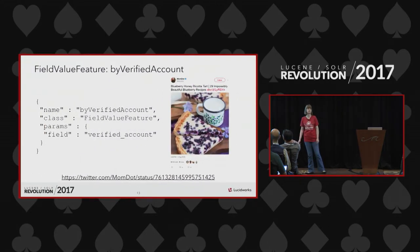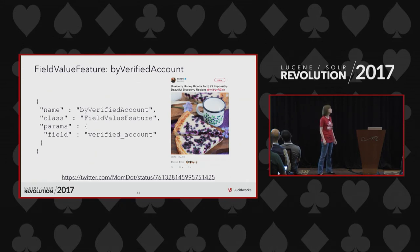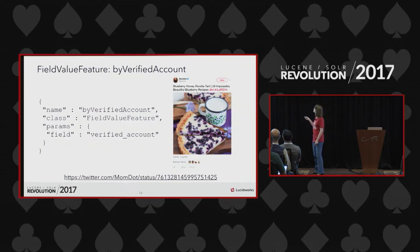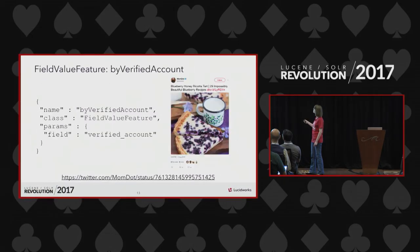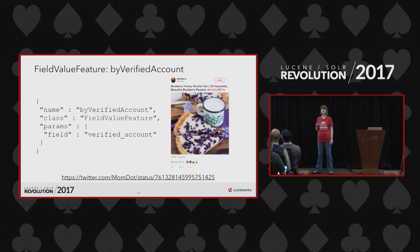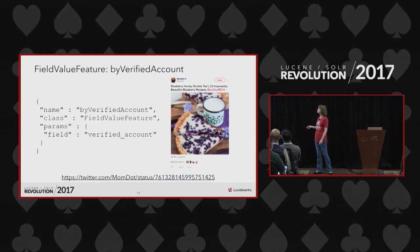Another feature is a field value feature — we look at the value of a particular field. In this example I've chosen the verified account feature: whether the tweet has the blue verified badge next to the username. You might have other indicators in your search index of where documents come from, and that may influence result quality.